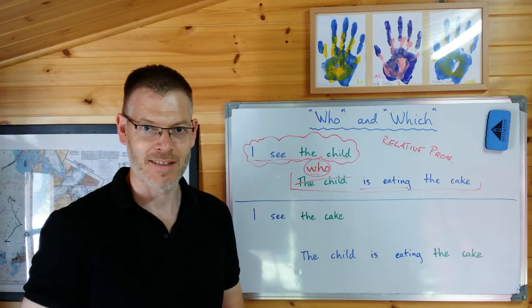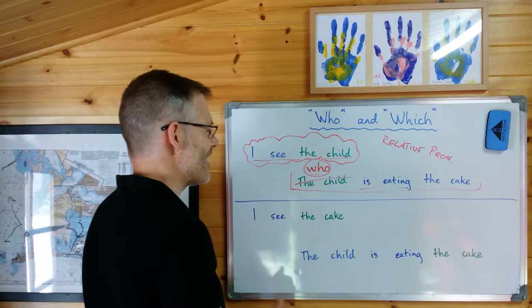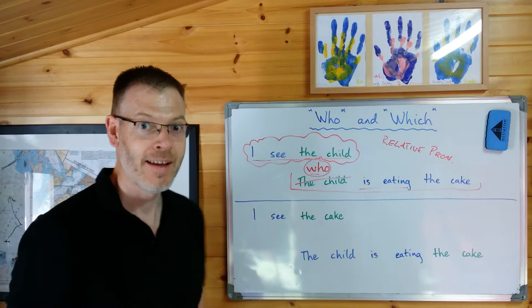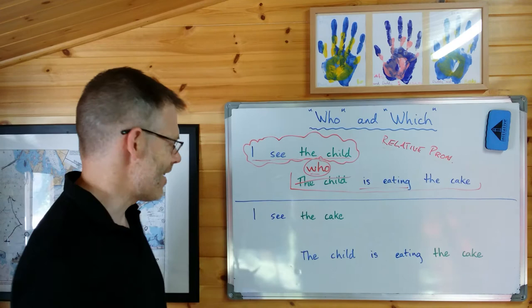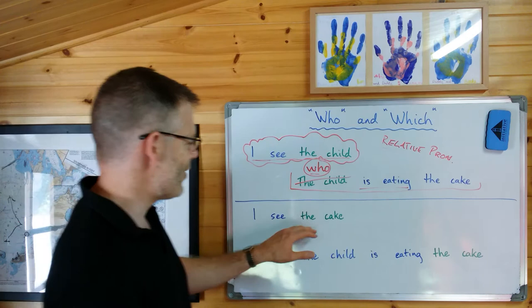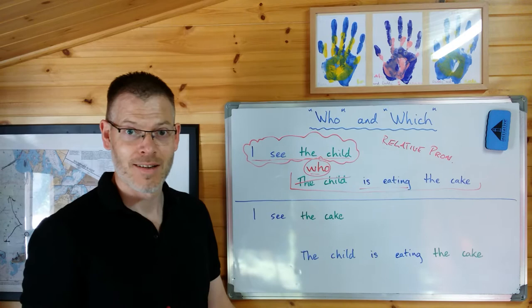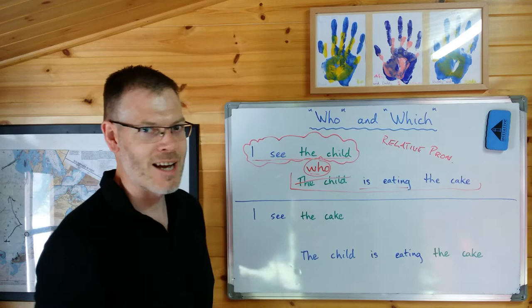All good so far? This chapter is all about this particular way of making complex sentences — by joining two sentences together using relative pronouns. Let's give another example. Here are two more sentences, completely separate independent sentences: 'I see the cake.' 'The child is eating the cake.' You can see the clues again with the green. Can you see how you could join these two separate sentences together to form a single complex sentence, in a similar sort of way? But this time I'll give you a clue — you're going to use the word 'which.' Just press pause on the video and see if you can do it.